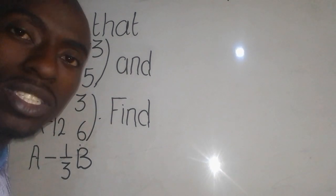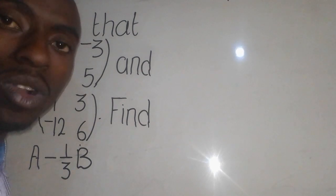When they say a matrix, it is just a rectangular arrangement of numbers in rows and in columns.